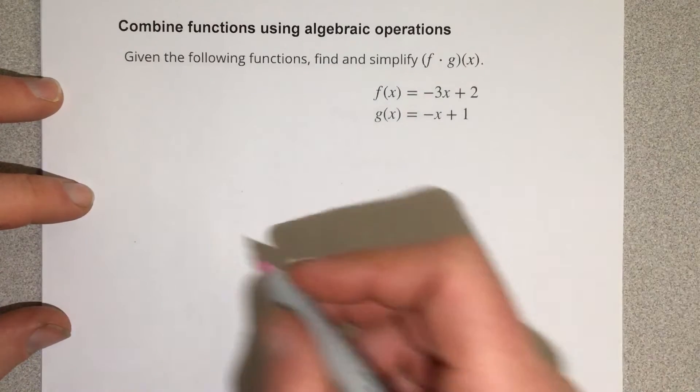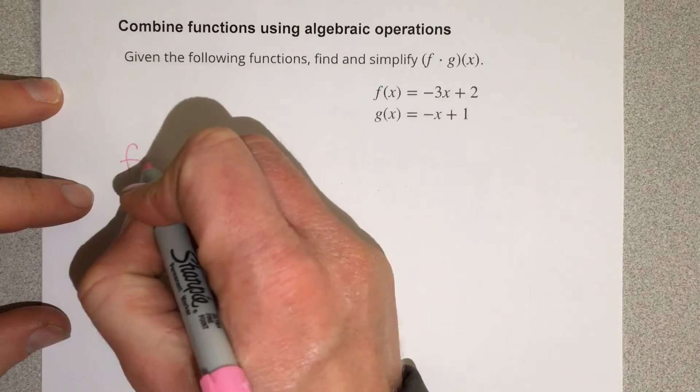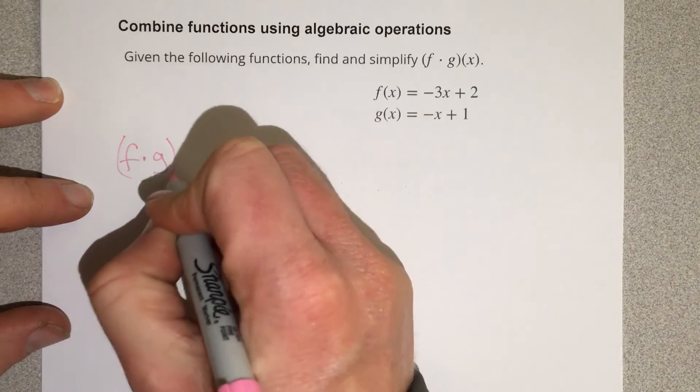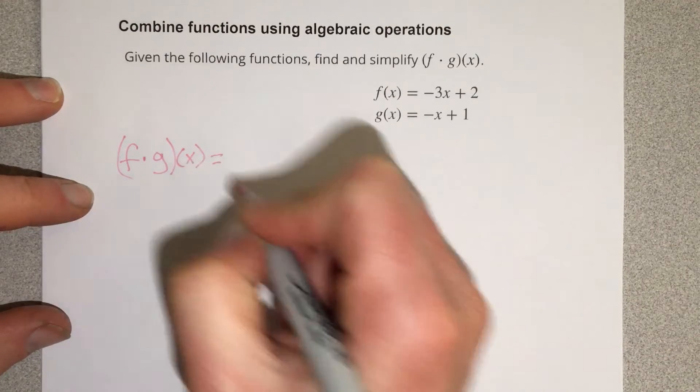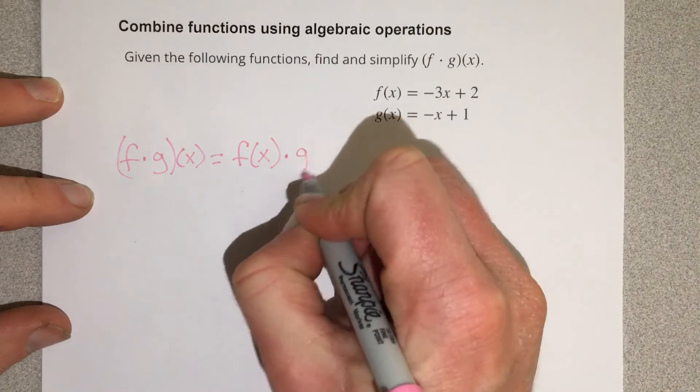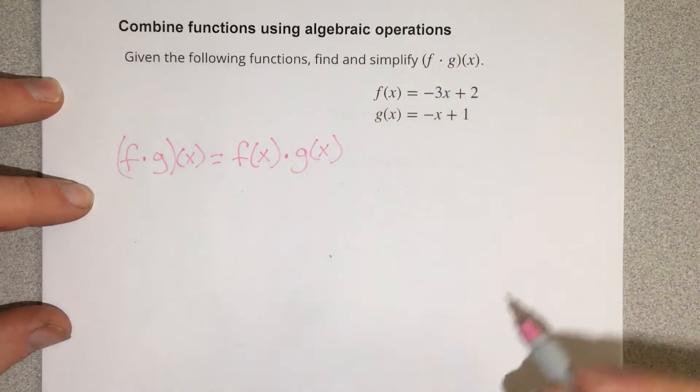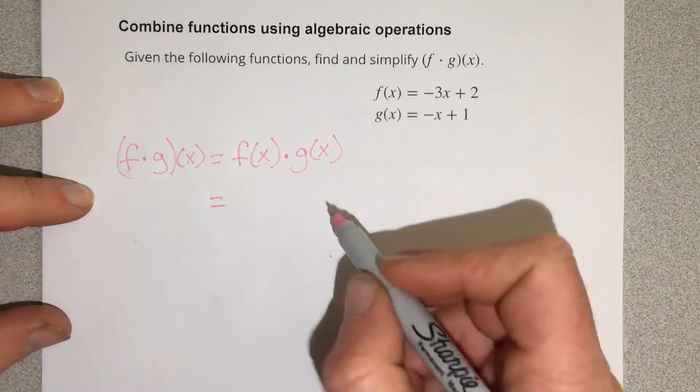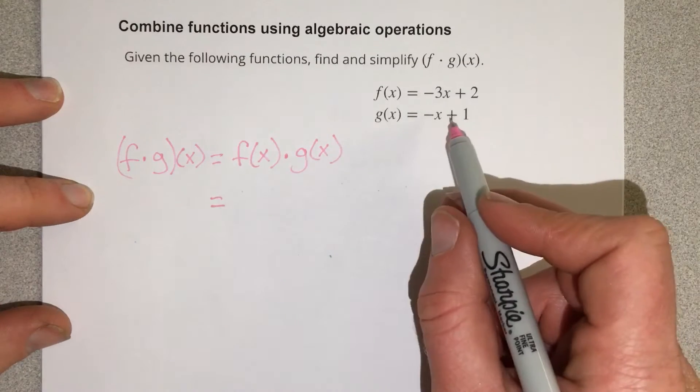And really all that means is f times g of x is equal to f of x times g of x. So they're really just saying they want us to take the f function and multiply it by the g function.